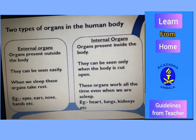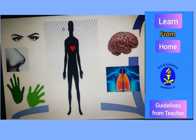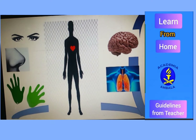There are two types of organs in the human body. What are they? External organs and internal organs. Just look at this picture. The organs which are present on the left hand side — you have seen all these organs since they are present outside your body. Therefore, they are called external organs.